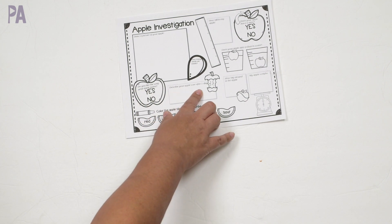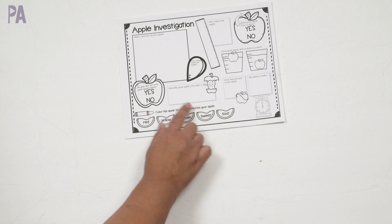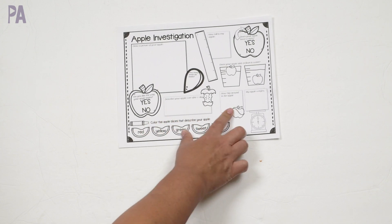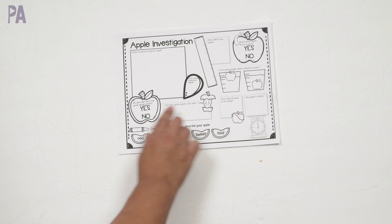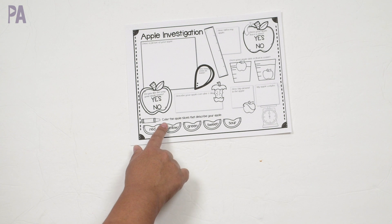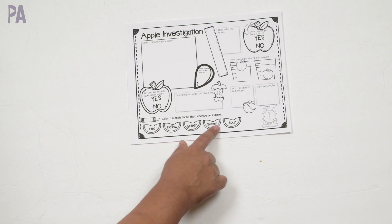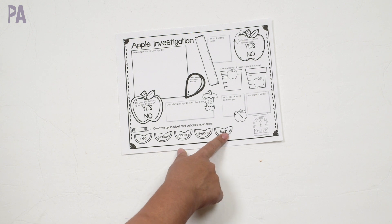This one says, describe your apple after one day. What's it going to look like? Of course, we all know that it's going to brown. This one says, how big or round is the apple? How much does my apple weigh? So you're going to measure the weight. And then down here is to color the apple slices that describe your apple. So we have red, yellow, green, sweet, and sour.